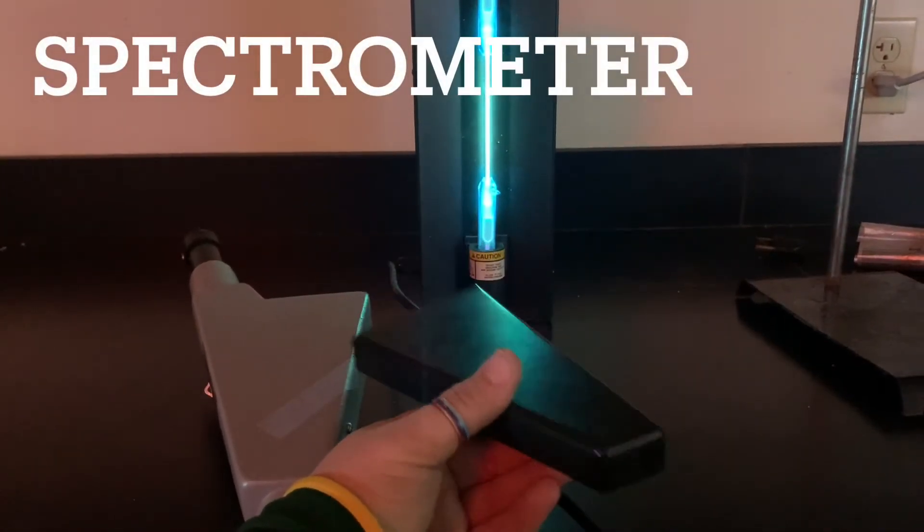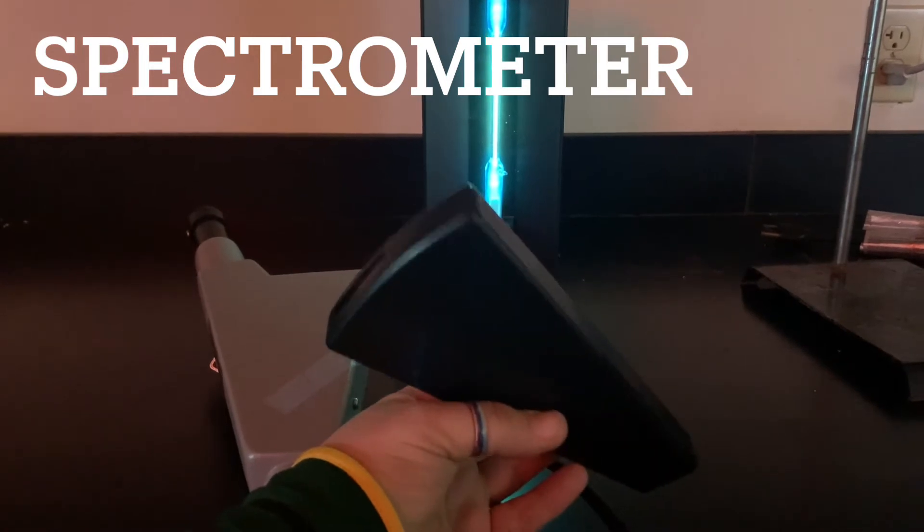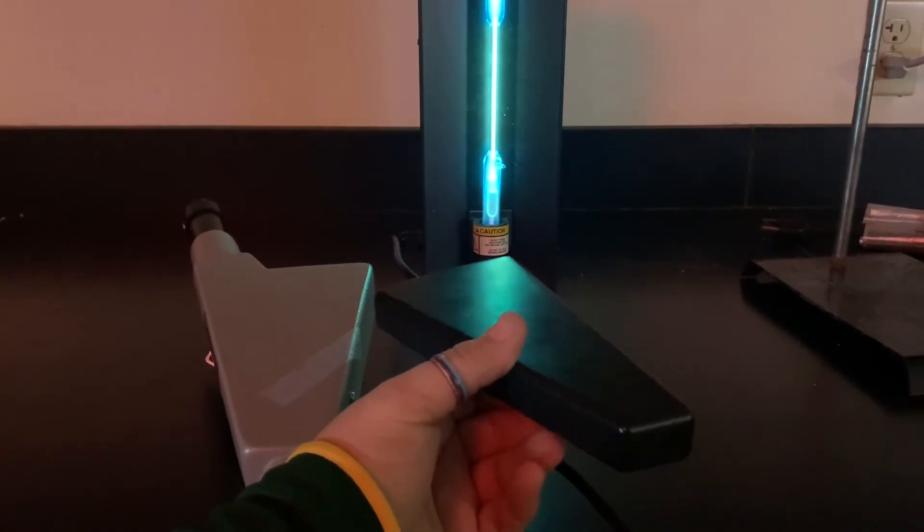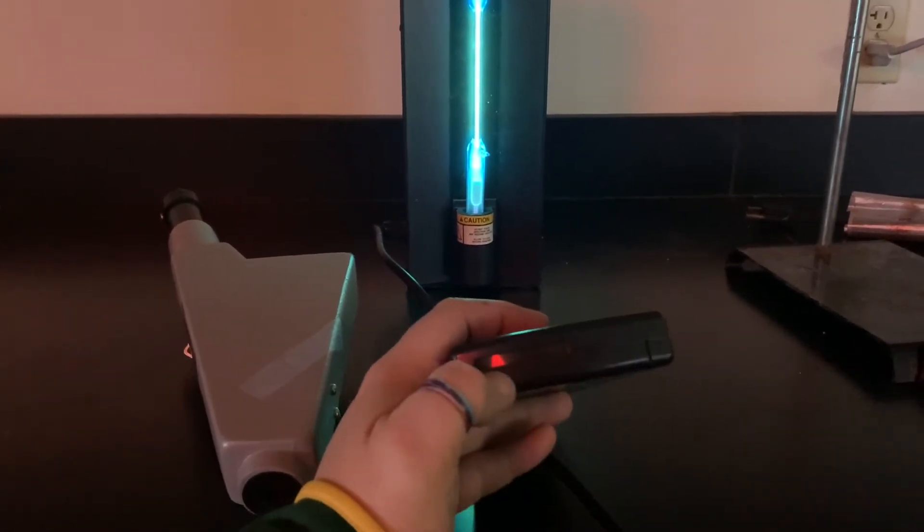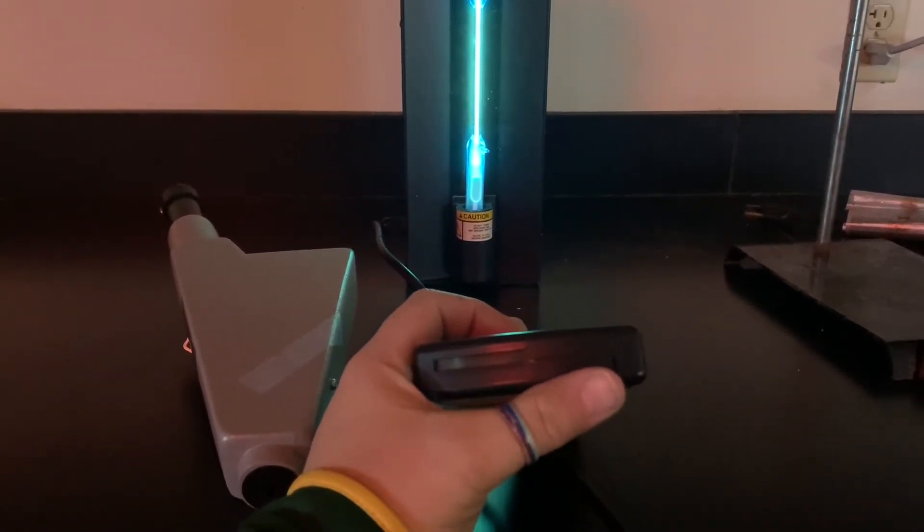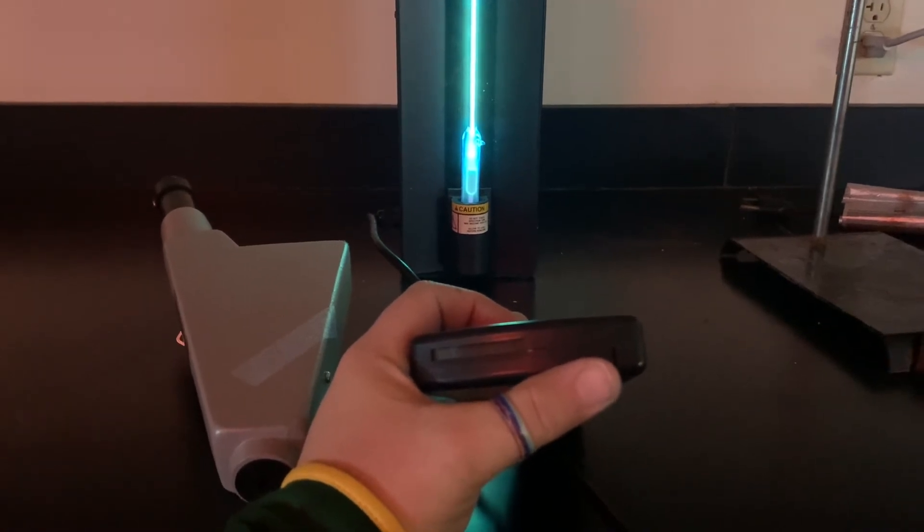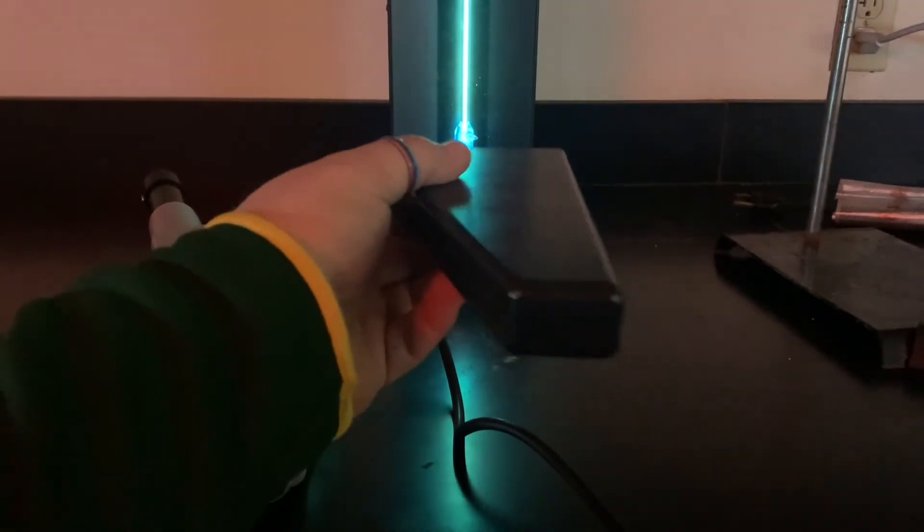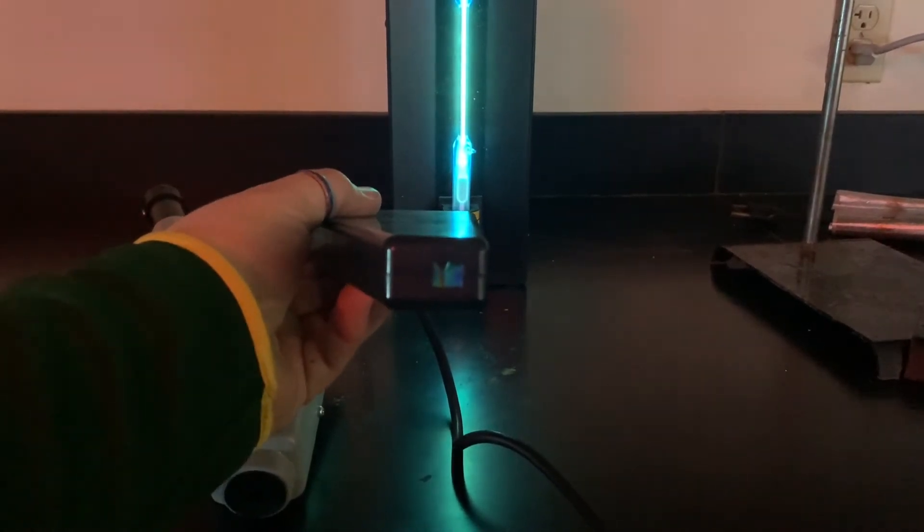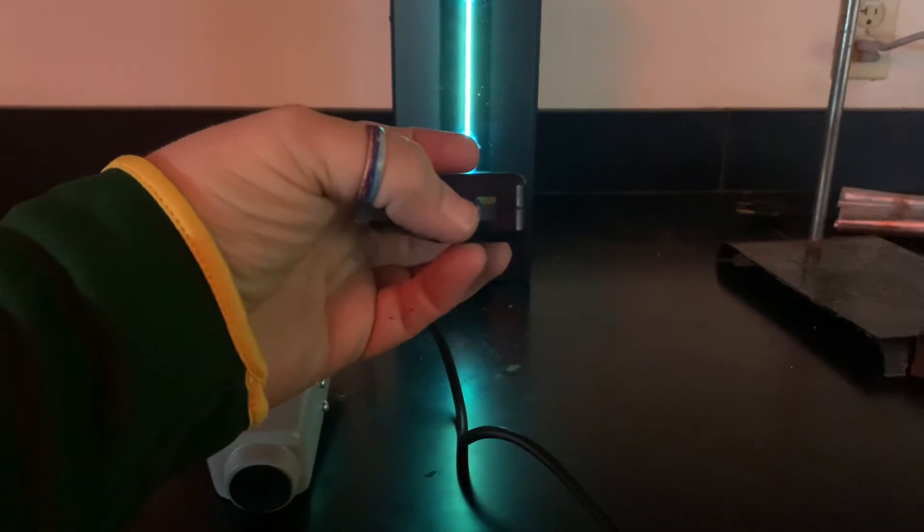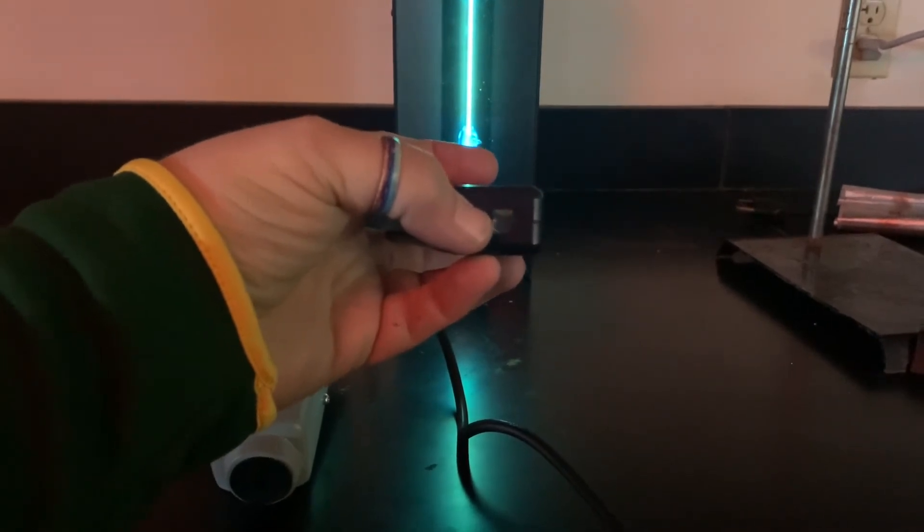So we'll be using what's called a spectrometer. And on the spectrometer we have this line down here, and you'll notice that there's a split right here. The split is where I've got to line my light up with. And then I am going to look through the eyehole right here. And what I'm going to want you to do is record the lines of light you see inside.